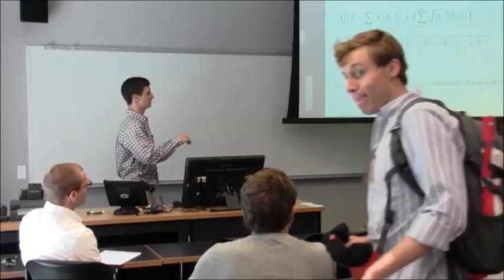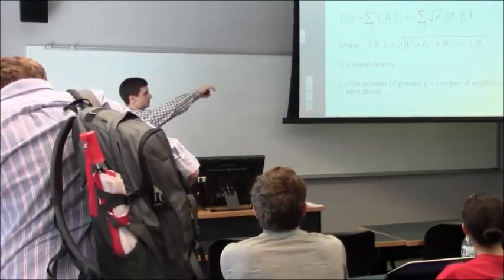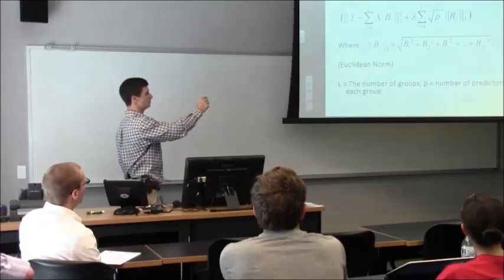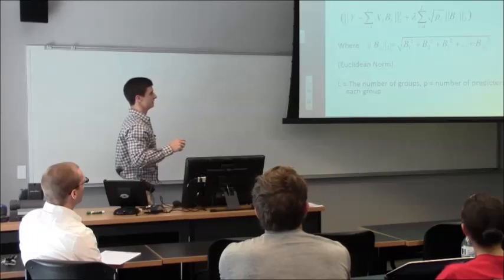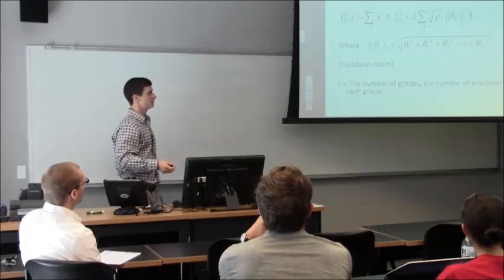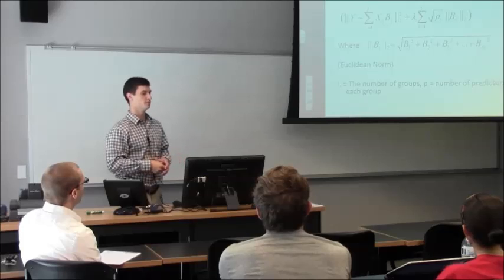And so it's the same as lasso except the penalty now is you have the group of betas are penalized together. So now the penalty is the Euclidean norm of your beta where it's equal to the B1 squared plus B2 squared plus B, all the way up to the number in that group. So if you want to shrink one to zero, you have to shrink that whole group to zero.